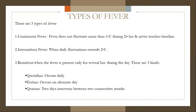Types of fever: there are three main types. Continuous fever is when fever does not fluctuate more than about 1 degree Celsius during 24 hours and never touches baseline. Examples include enteric fever, malaria, tuberculosis, and lobar pneumonia.